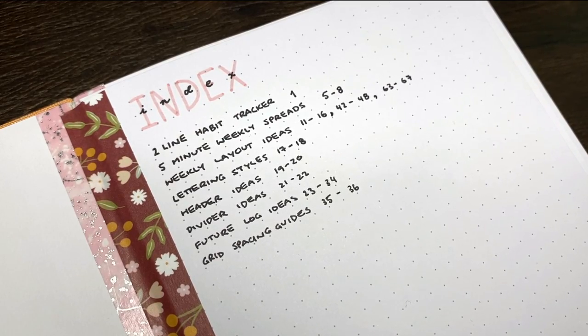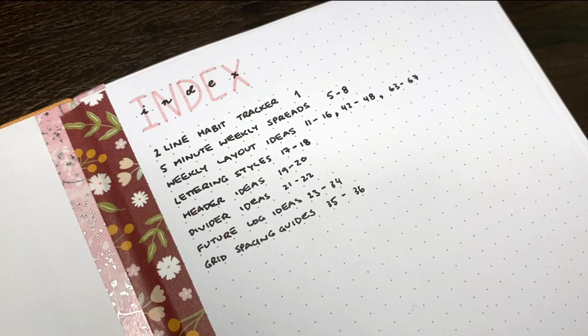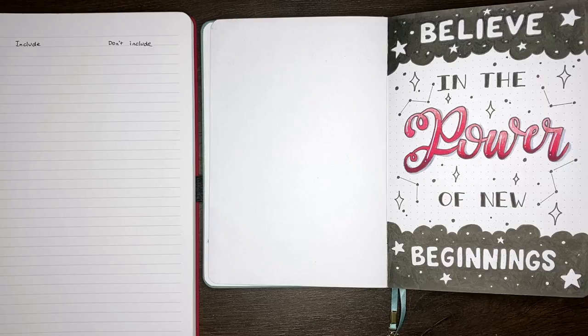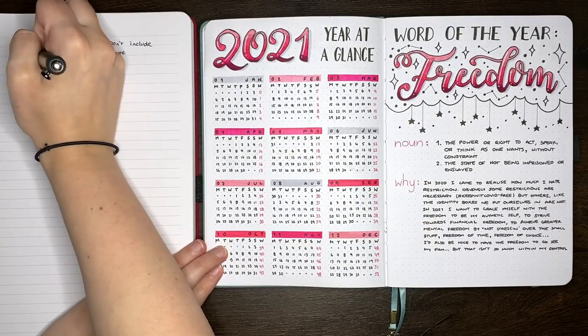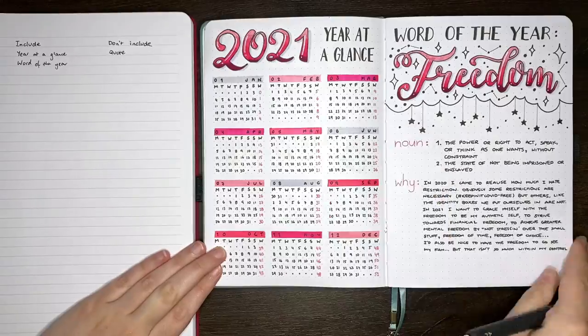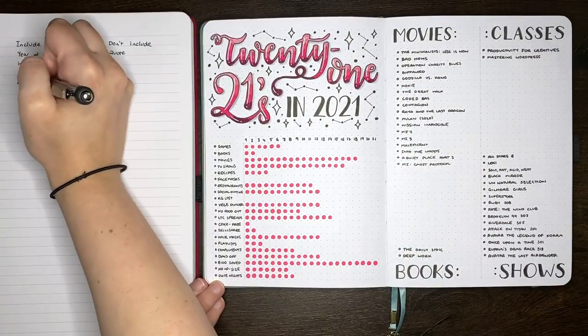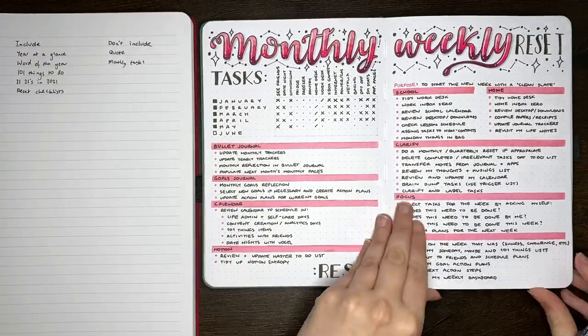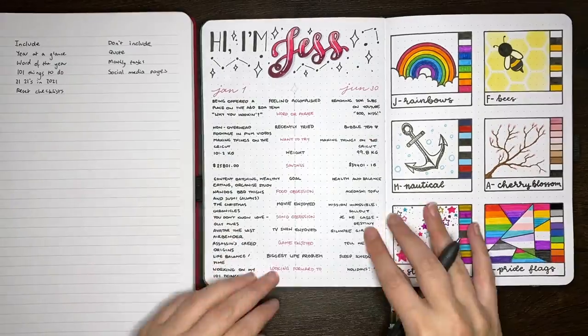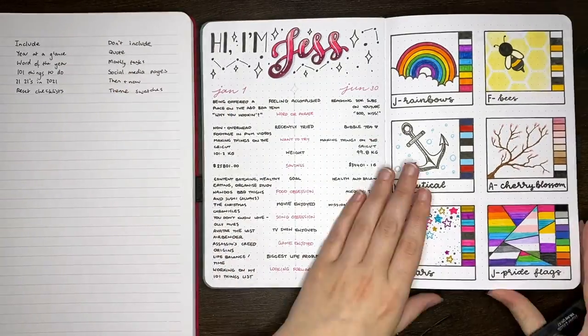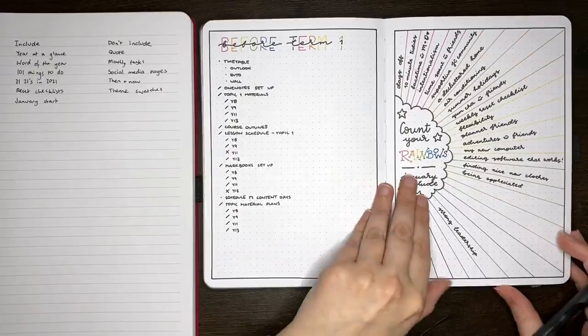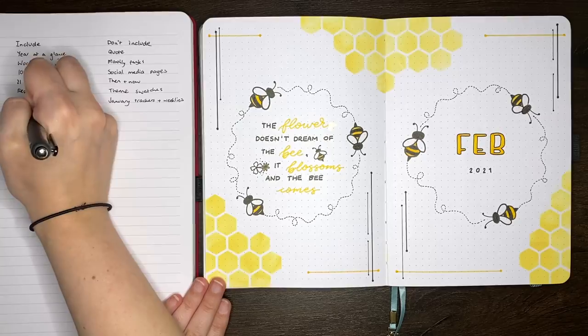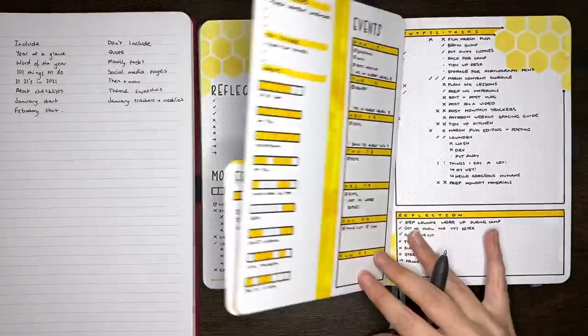Although an index may just be a simple list of collections in your journal, this doesn't mean that there aren't ways to make it more functional or easier to use. One of the ways to make your index more user friendly is first to consider what you're actually going to be indexing. Not every page in your journal needs to be added to the index, and it may actually be more helpful just to index pages of importance, rather than every single daily log, weekly log or monthly tracker. Keeping it to just the important collections means that you don't have to search through a whole heap of index entries that you aren't really going to need to know the placement of in future.